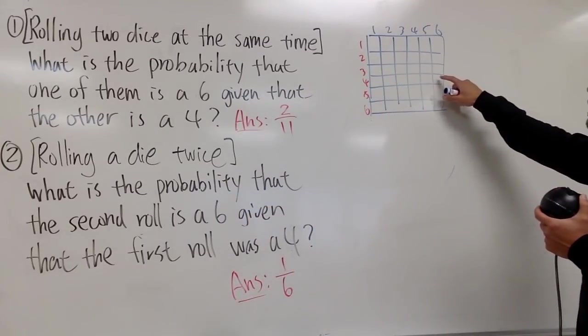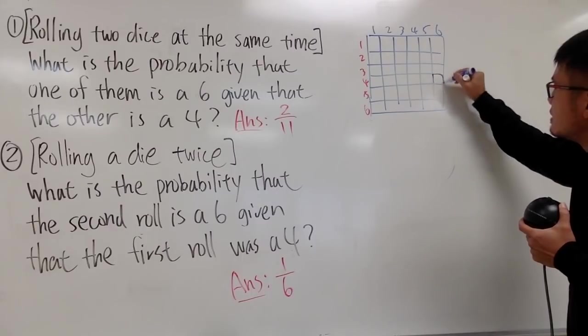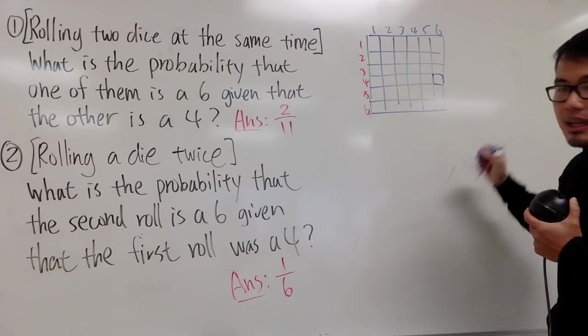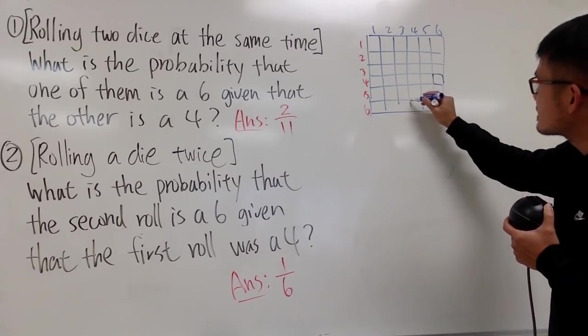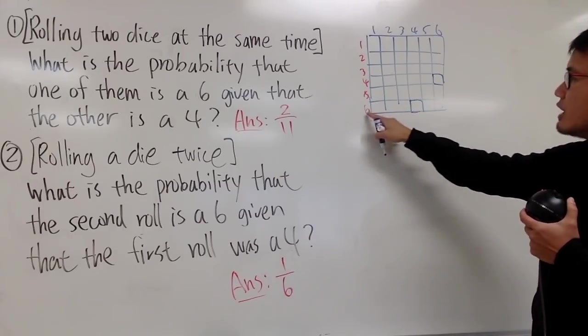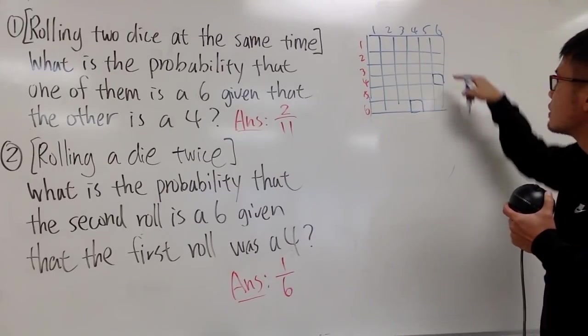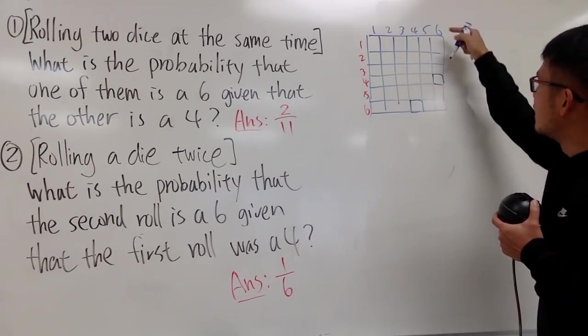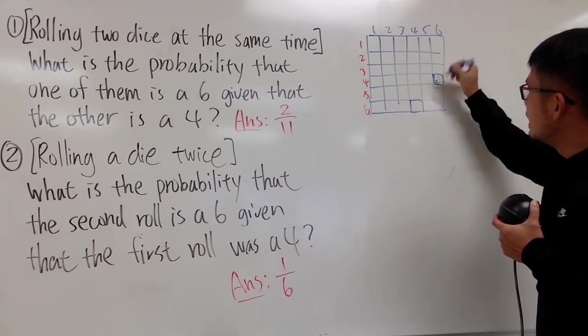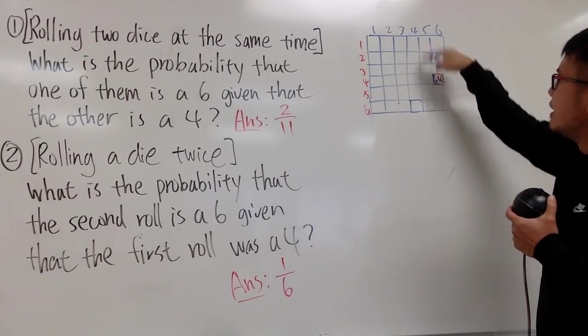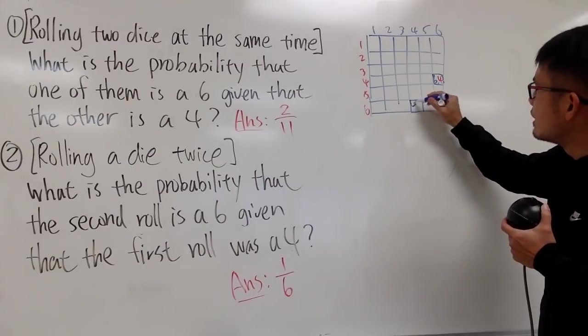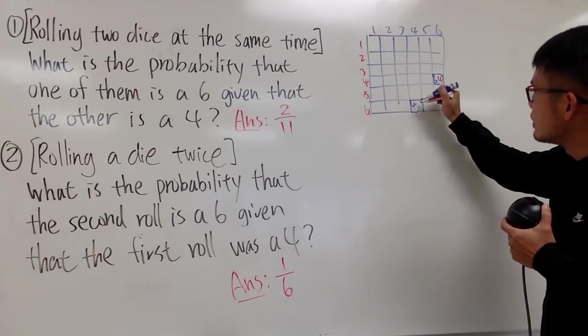This means we are talking about this box right here, because this right here is 4 and 6. And likewise, this box, because this box also gives you 4 and 6. So this box means that we have the 6 in blue, and then the 4 in red, and this box means that we have the 4 in blue, and the 6 in red.